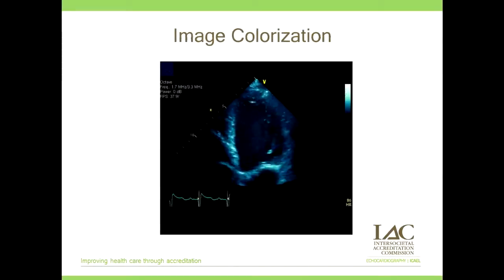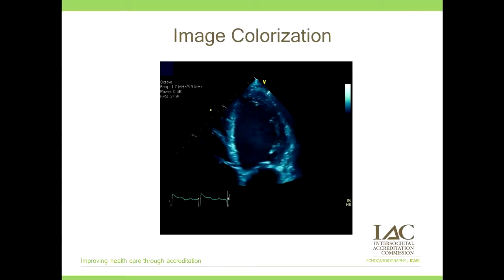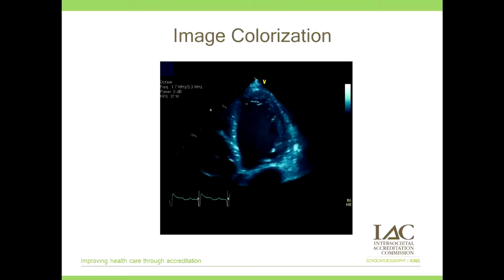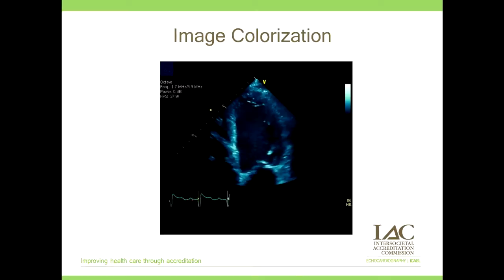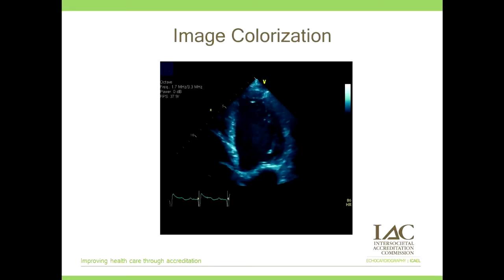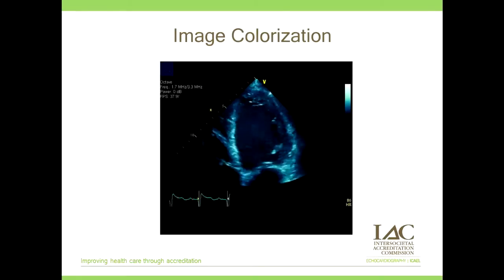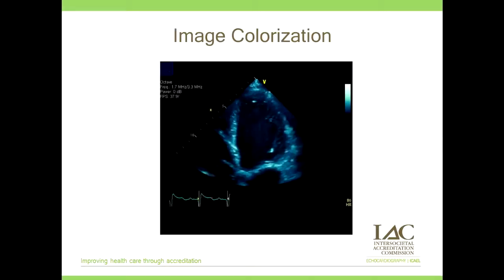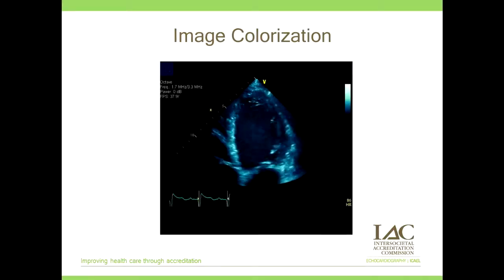Another tool in the ECHO lab is image colorization, which we utilize a lot. As you can see, this patient has rather severe LV dysfunction, and image colorization helps to better see the endocardial definition and the smoke in the left ventricle. This tells the sonographer they need to interrogate the ventricle more thoroughly, looking for a thrombus. Image colorization also helps when the sonographer is tracing the 2D image of the left ventricle for ejection fractions and volumes — an important tool when assessing the left ventricle.